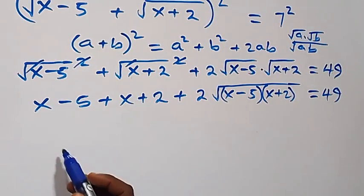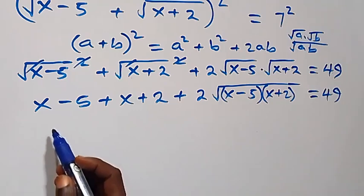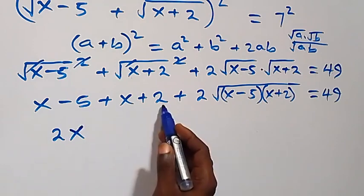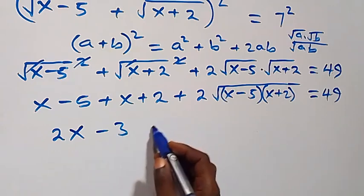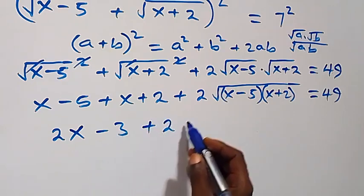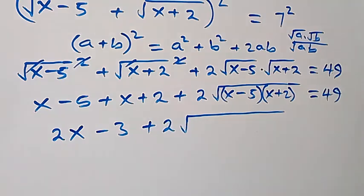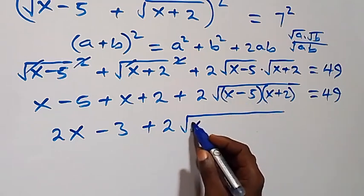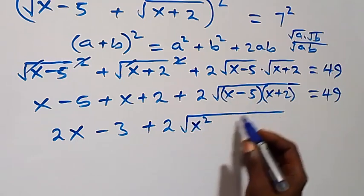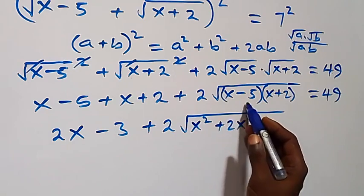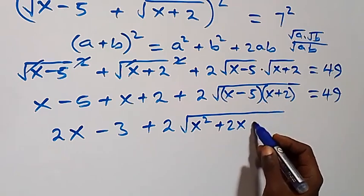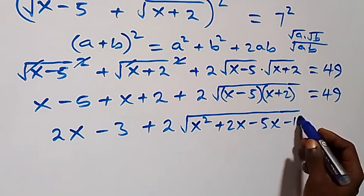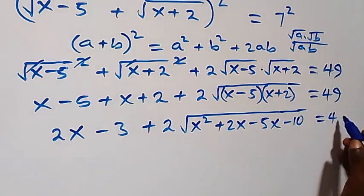We simplify: x plus x is 2x, minus 5 plus 2 is minus 3, then plus 2 multiplied by square root of the expansion: x times x gives x squared, plus 2x, minus 5x gives minus 5x, then minus 10, equals 49.